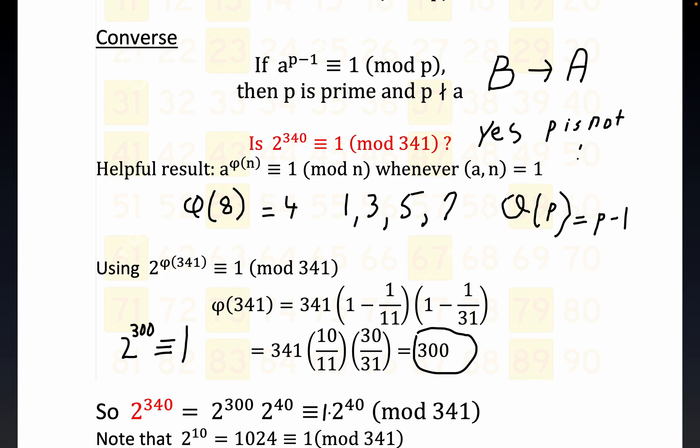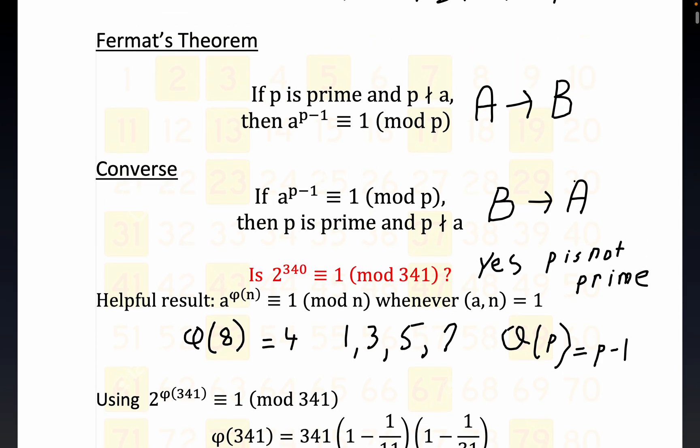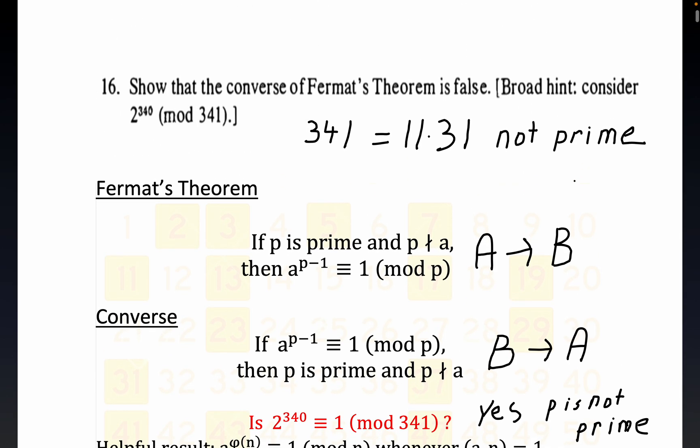And if p is not prime, that means the converse is false. P is not prime - we've shown that, and we've also showed it's congruent to 1. 2 to the 340th is congruent to 1 mod 341, but p is not prime. And so the converse is certainly false, and we have proven what we set out to prove.